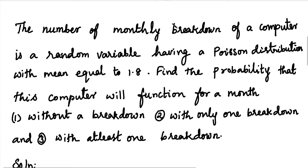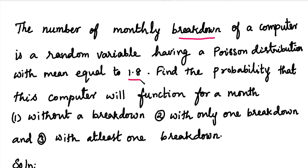Students, in this video we have two simple problems solved. What is the number of monthly breakdowns of a computer? It is a random variable having a Poisson distribution with a mean equal to 1.8. Find the probability that this computer will function for a month without a breakdown, with only one breakdown, and with at least one breakdown.